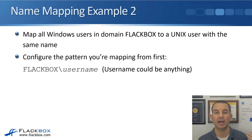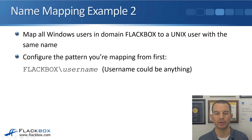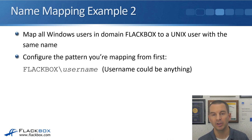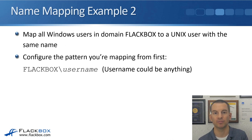If you had 500 different users, configuring 1,000 individual rules would not be practical. This is where regular expression wildcards come in handy — usually you can configure just a couple of rules, one in each direction. The next example covers Windows and Unix usernames that are the same. The Windows username is Bob and the Unix username is also Bob. When coming in from Windows, we need to strip off the domain name — mapping Flackbox\Bob to just Bob.